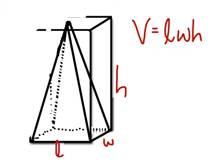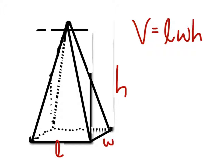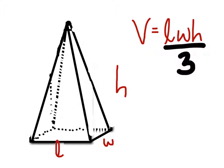Our measurements still stay the same, but it's going to change our volume. How does it change the volume? Well, if we compare the original prism to this pyramid — and this would be a rectangular pyramid — its volume is just the original volume as though it were a rectangular prism. The only difference is it's divided by 3. In other words, a pyramid is only a third of its original prism.